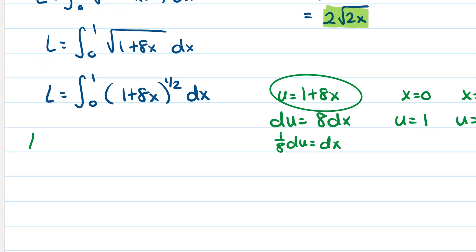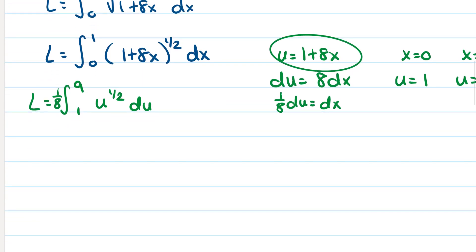So now our integral changes to the integral from 1 to 9, 1 eighth on the outside, and a u to the 1 half du. So when we do the integral, you get 1 eighth times 2 thirds u to the 3 halves from 1 to 9.